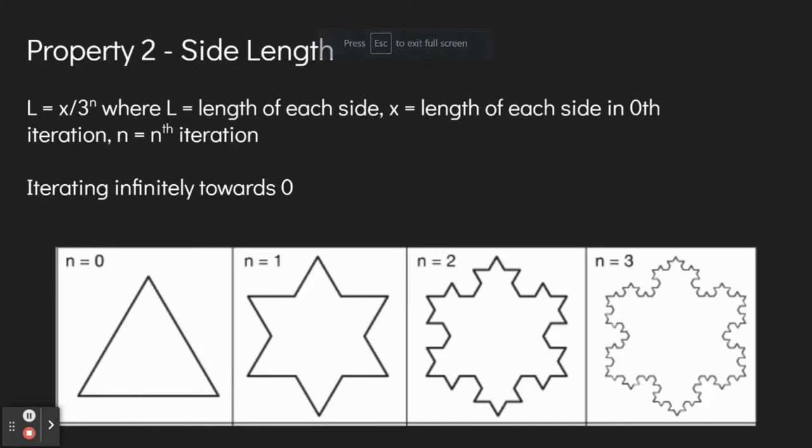Next up, finding the length of each side. This is the second property. The formula for this is l equals x times three to the negative n, or x divided by three to the n, where l is the length of each side, x is the length of each side of the zeroth iteration, and n is the number of iterations.